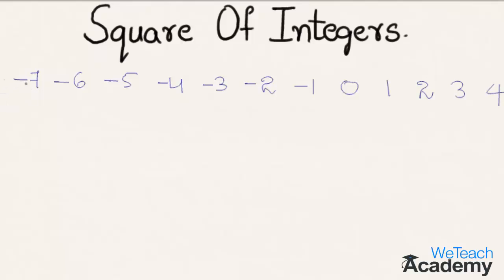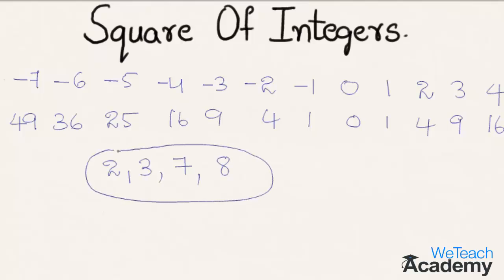Now let us square the integers. Minus 7 into minus 7 is 49. Similarly, square of minus 6 is 36, and so on. By observing the square of integers, we can see that the square of integers do not end in the digits 2, 3, 7, and 8. The last digit of each perfect square is either 0, 1, 4, 5, 6, or 9.